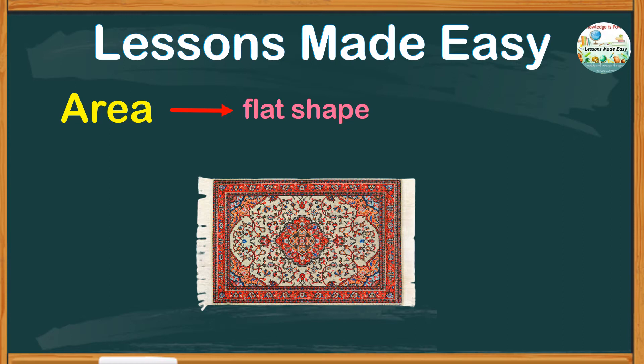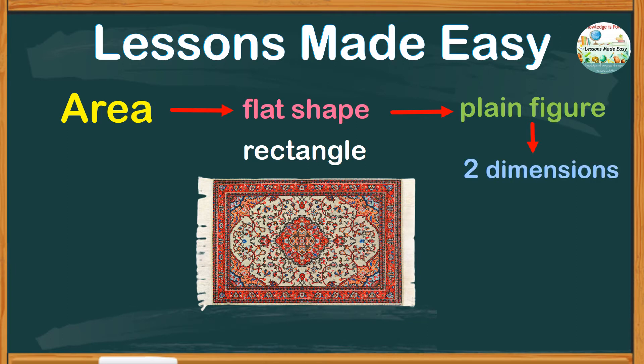This has the shape of a rectangle, and it is flat. When we say flat shape, we are talking about a plane figure, or a shape with two dimensions, or two measurements. In this example, we can measure the length and the width.